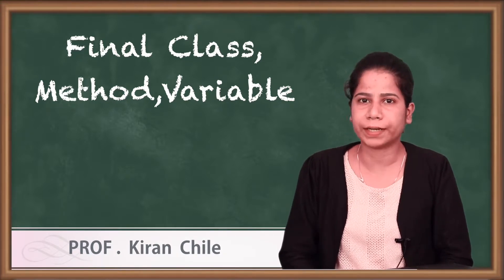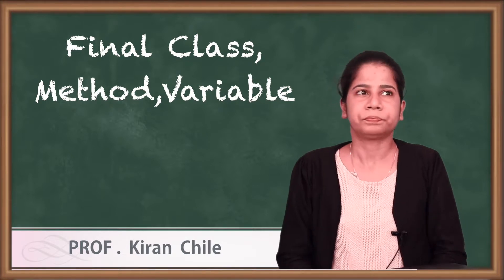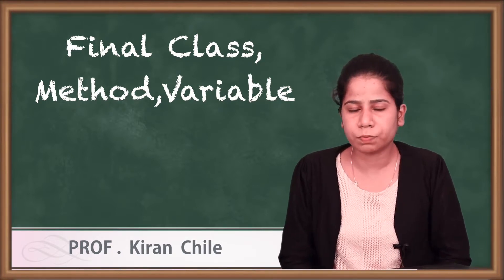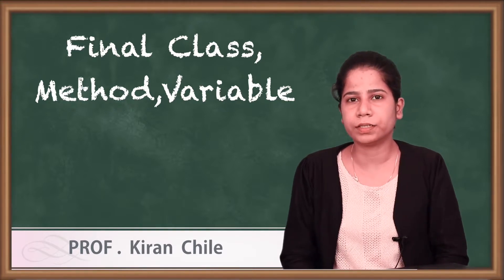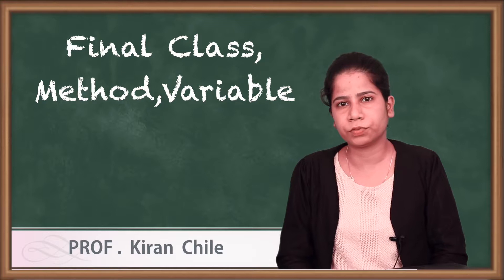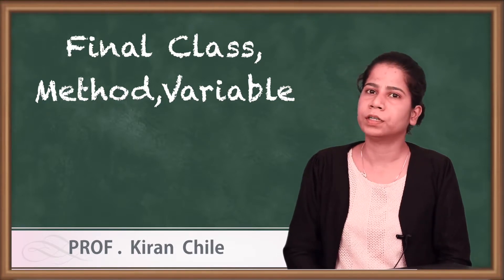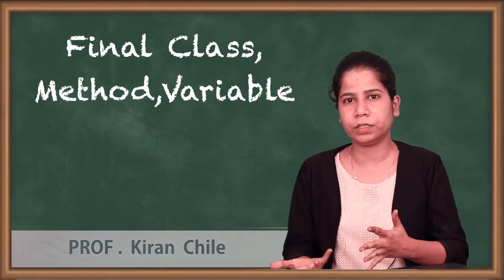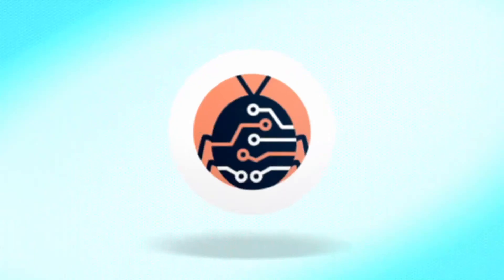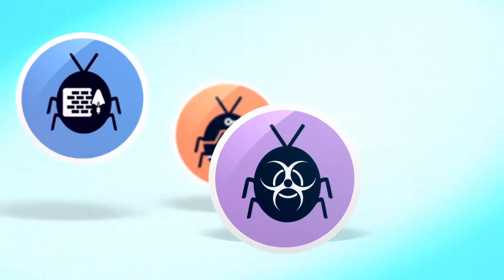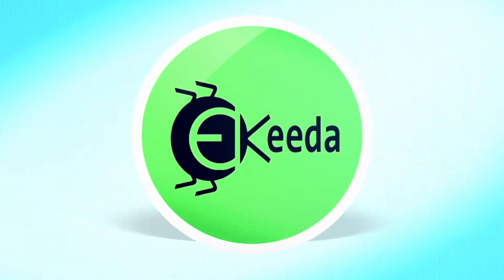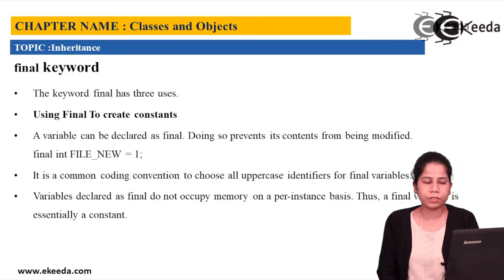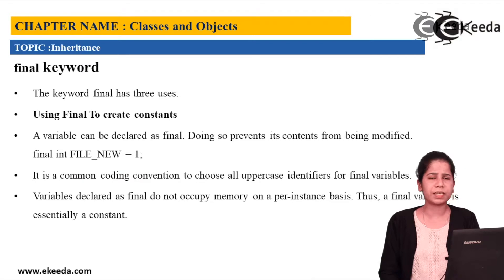And that is nothing but the final keyword. Now basically the purpose of this particular final keyword is different for method, it is different for variable, and it is different for class. So let's check it out how actually we can work with finals. The final keyword is having three uses. The first use is if I want to make constants.